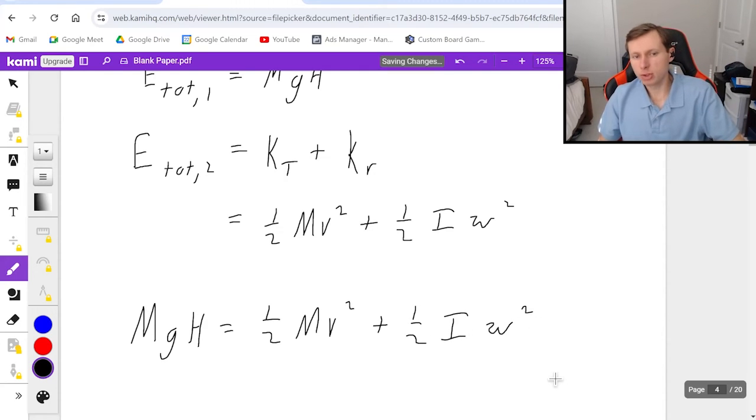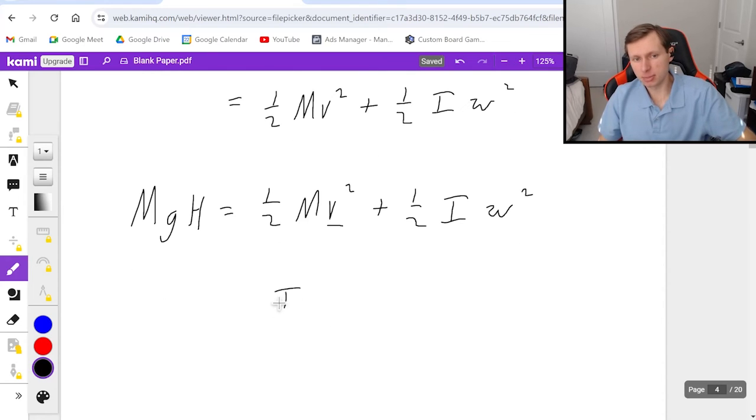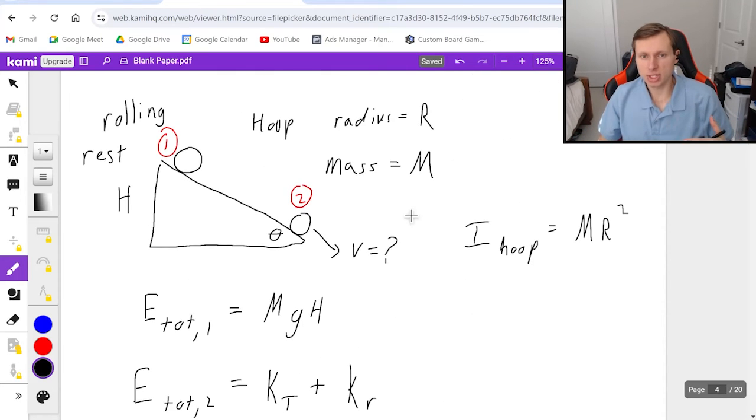The problem now is we have too many unknown variables, and I want to solve for V, which means I got to find I and omega. So if I want to find I, the good news is it's kind of already given for us. I for a hoop is equal to just mr squared. And all of these are variables that were given in the problem. Mass was M, radius was capital R. We're good there.